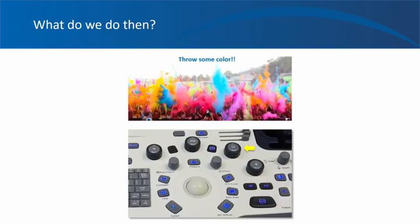When you find something suspicious for a stone but you are not sure, just turn on the color button on your machine, take the color box to that area, and see what happens.